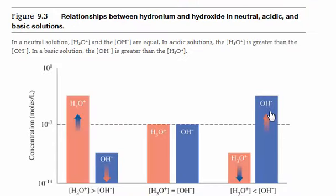In a basic solution, we add a solute that causes the hydroxide concentration to rise above 1 times 10 to the minus 7. And that means our hydronium concentration decreases.